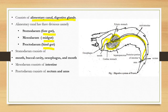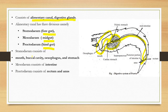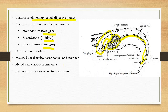The alimentary canal has three divisions: the foregut (stomodium), the midgut (mesodium), and the hindgut (proctodium). The stomodium consists of mouth, buccal cavity, esophagus, and stomach. The mesodium consists of the intestine, and the proctodium consists of rectum and anus.